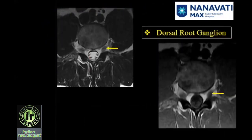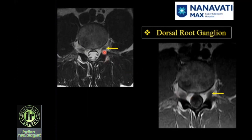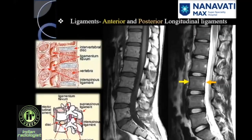A little bit about the dorsal root ganglion. As the nerve roots exit at the foraminal level, you get a slight spindle-shaped appearance of those exiting nerve roots. These are not the original neurons but these are the dorsal neural ganglia. They can be as small as this or as large as this, and they should not be mistaken for a sequestered disc fragment.